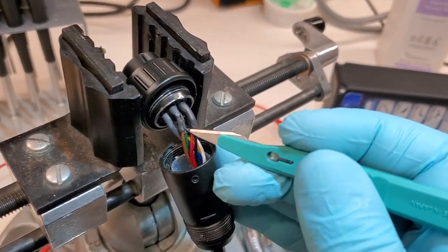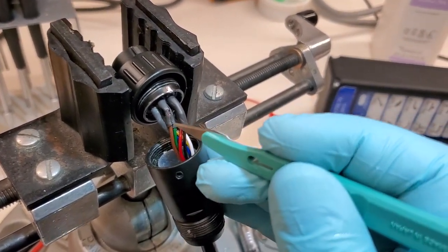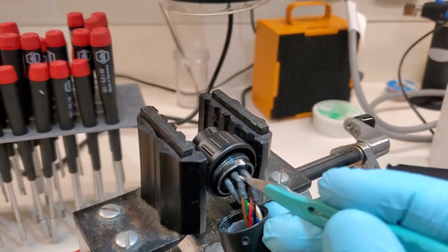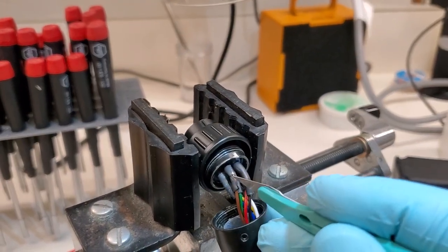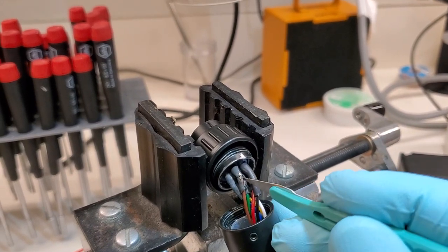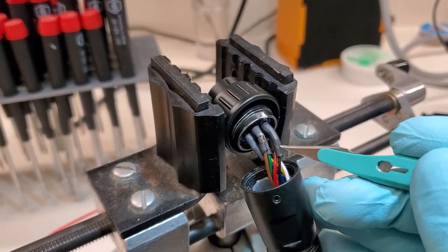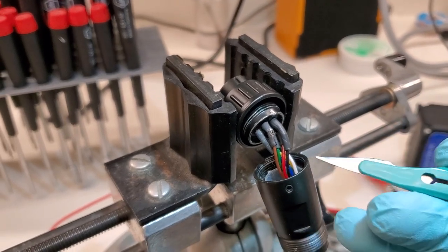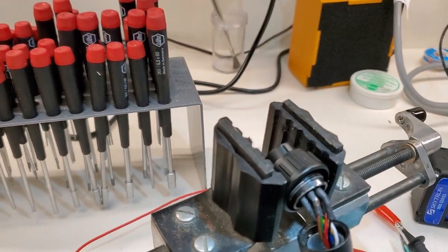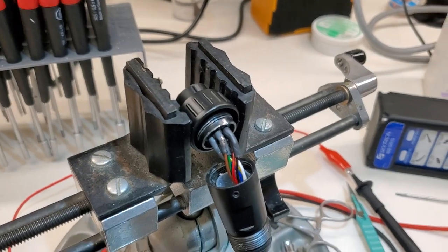I use the scalpel to go in and separate the heat shrink tube. I'll pull it away. You can see right here that the wire is damaged. So I'm just going to go in and fix that wire and check it out again.